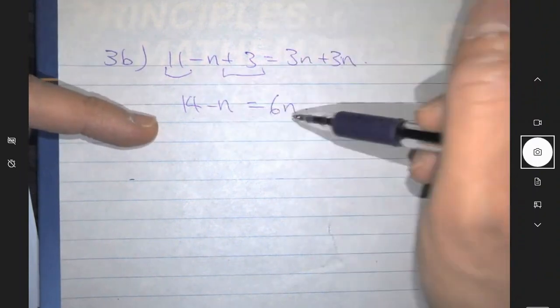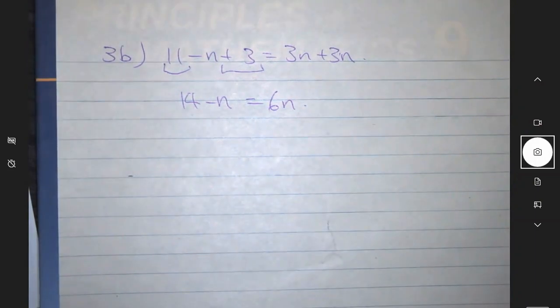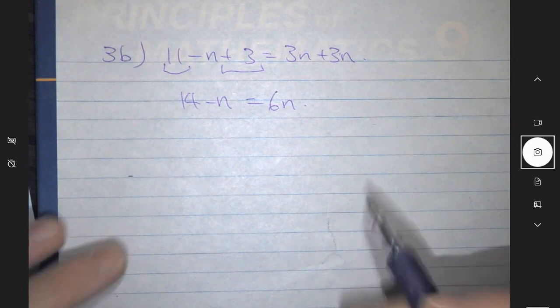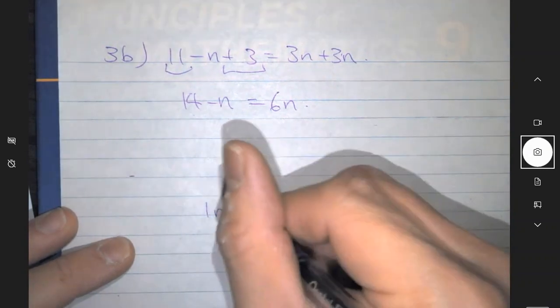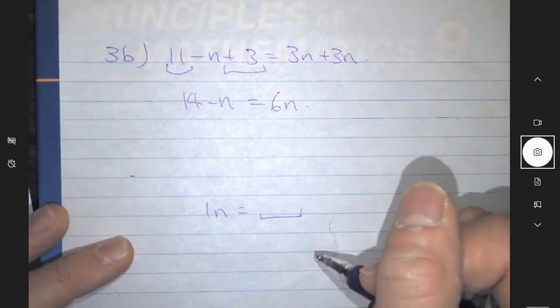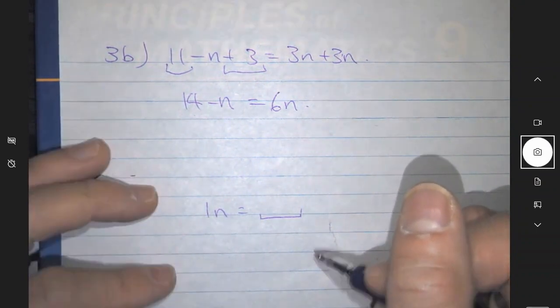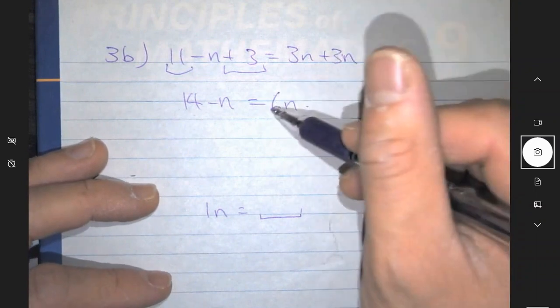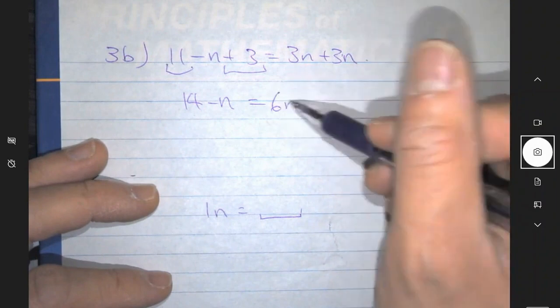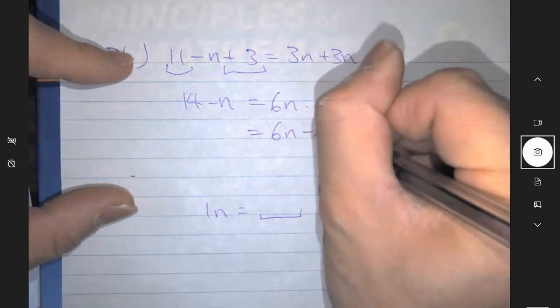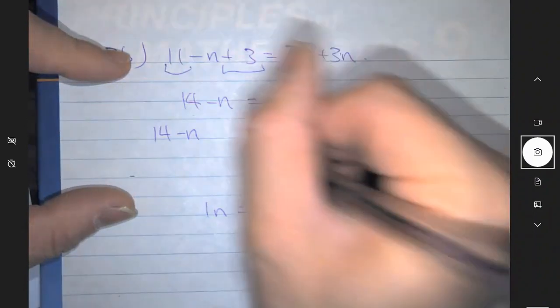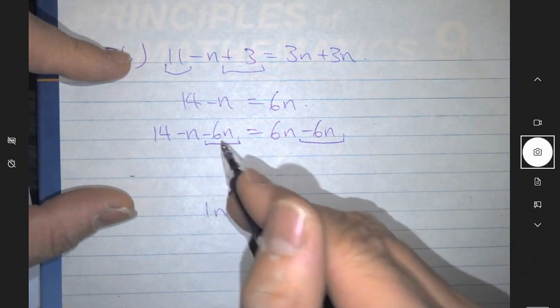So on this side, 14 minus n equals 6n. Now because you guys are still new to solving equations, I'm going to make sure the letters are on the left and numbers on the right. I want to move this 6n from the right to the left, so I need to do the opposite operation. The opposite of 6n is minus 6n — and I also had to do minus 6n here at 14 minus n.